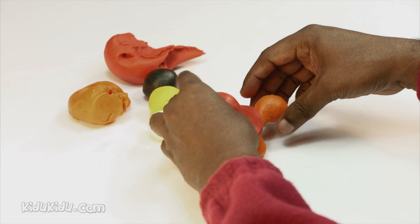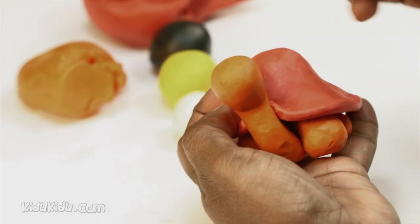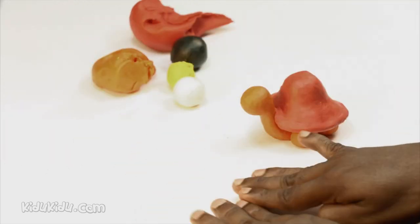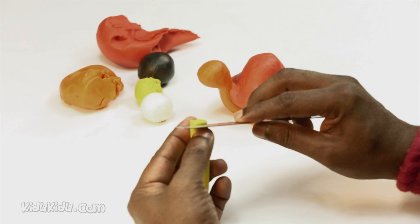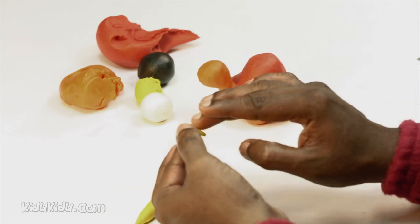There, you now have a shell, but we want some more color, don't we? Let's make some small yellow discs with the yellow play-doh and stick them all over the shell of the tortoise.